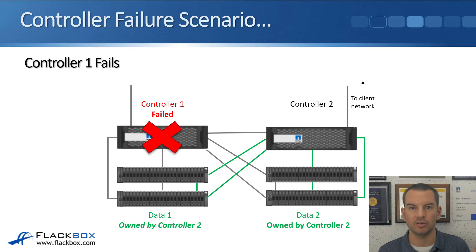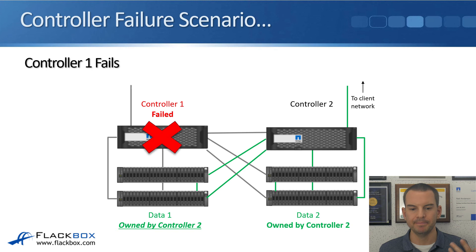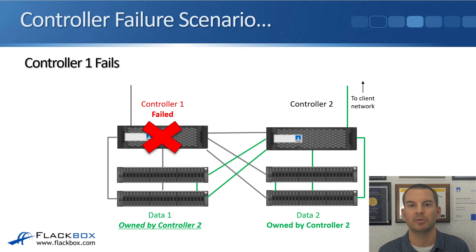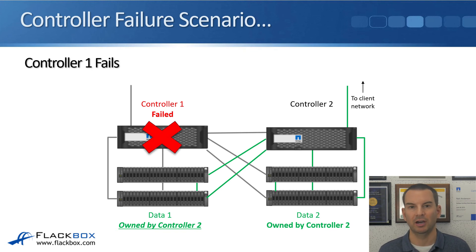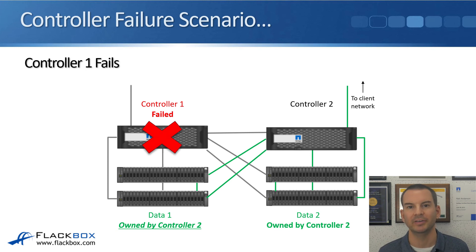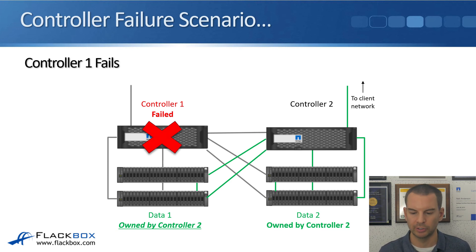Because of failover, it's recommended you do not put more than 50% load on either controller. If controllers were running at 100% and a failure occurred, the surviving controller would be trying to serve 200% load — which it can't do, causing severely degraded performance. So to maintain acceptable performance, the recommendation is to keep load below 50% on each controller.